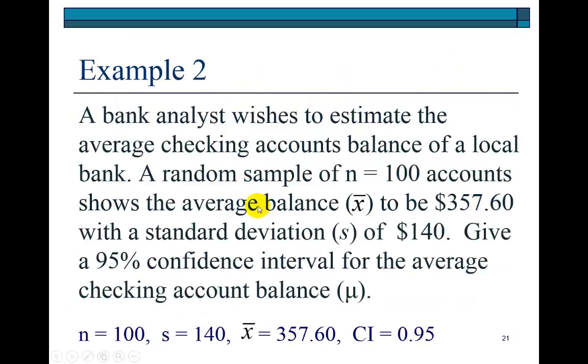Here's an example. You're trying to calculate the 95% confidence interval for the average account balance in a local bank. You take a random sample of 100 accounts and find the average account balance to be $357.60. The standard deviation is 140, and the confidence level we want to calculate is 95%.